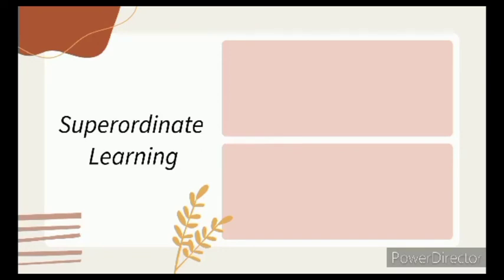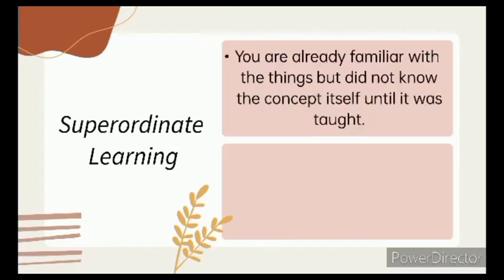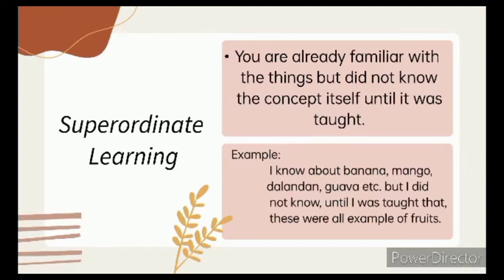Let's proceed to the third one, which is the Superordinate Learning. In Superordinate Learning, you are already familiar with the things, but did not know the concept itself until it was taught. For example, I know about banana, mango, dalandan, guava, etc. But I did not know until I was taught that these were all examples of fruits. You already know a lot of examples of the concept, but you did not know the concept itself until it was taught to you.